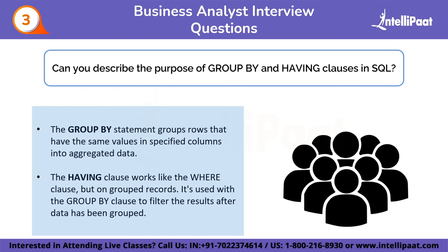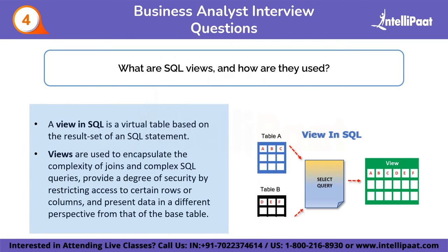The third question is: can you describe the process of GROUP BY and HAVING clauses in SQL? The GROUP BY clause groups rows based on values in one or more columns and is typically used with aggregate functions like COUNT, SUM, and AVERAGE. The HAVING clause filters the results of a GROUP BY based on a specified condition, applied after GROUP BY and before ORDER BY.